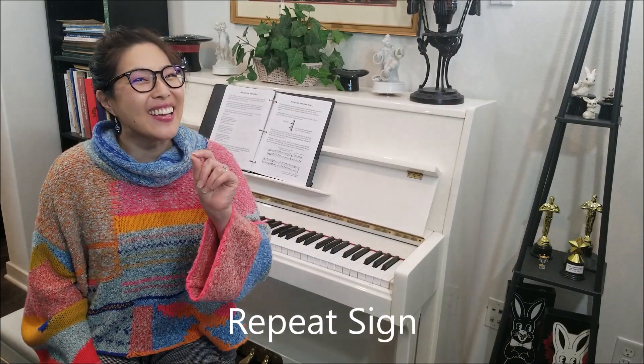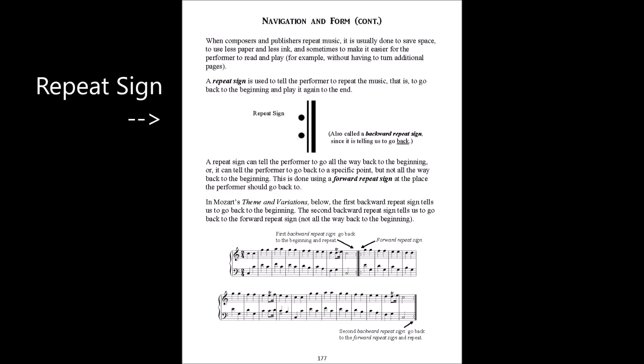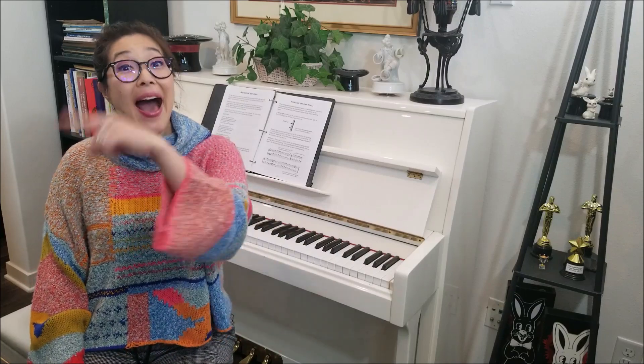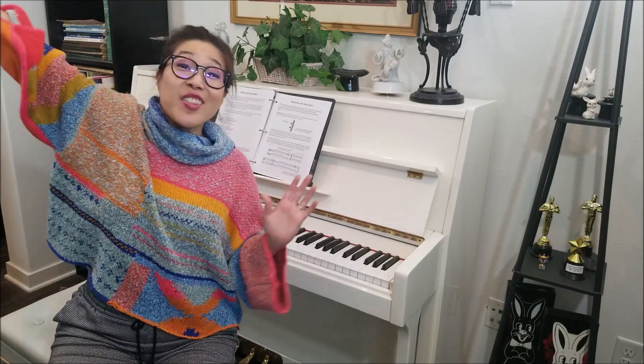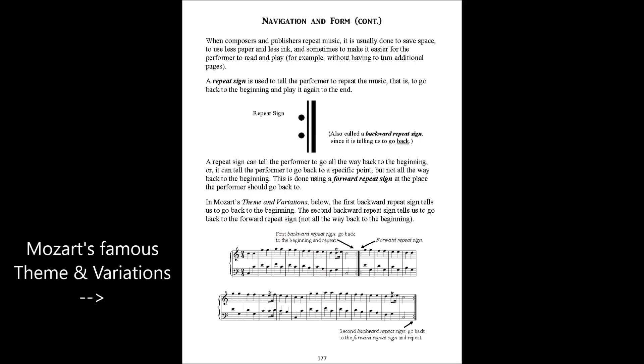A repeat sign is used to tell the performer to repeat the music. It tells the performer to go back and play that portion again. A repeat sign could tell the performer to go all the way back to the beginning, or it could tell the performer to go back to a certain point. In Mozart's Theme and Variations, the first backward repeat sign tells us to go back to the beginning, while the second tells us to go back to the forward repeat sign, not all the way back to the beginning.